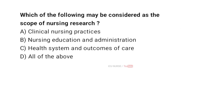Which of the following may be considered as the scope of nursing research? A. Clinical nursing practices. B. Nursing education and administration. C. Health system and outcomes of care. D. All of the above. And the correct answer is D. All of the above.